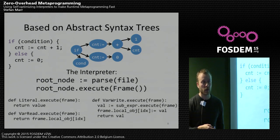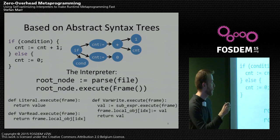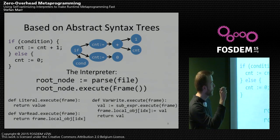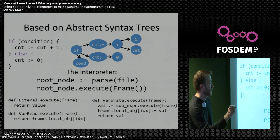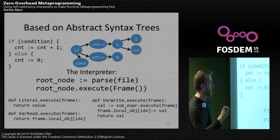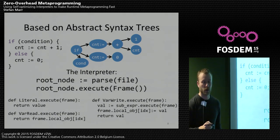For writing a variable, it's very similar, but the difference is you first have a sub-expression to evaluate. So in our assignment statement, we first want to get the value — we go into the child node, execute that node, and get back a value which we then store into the frame object at the given index of that variable.